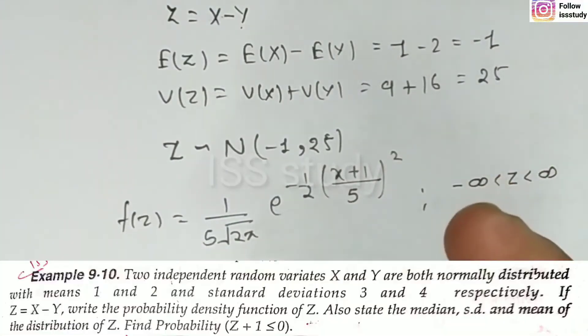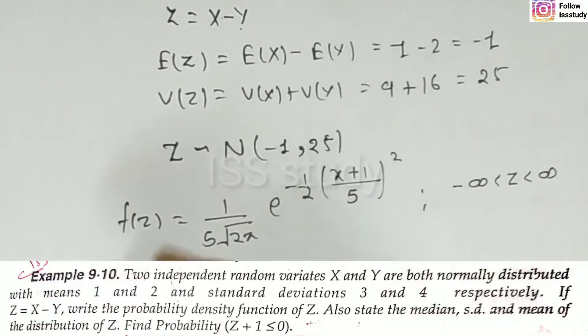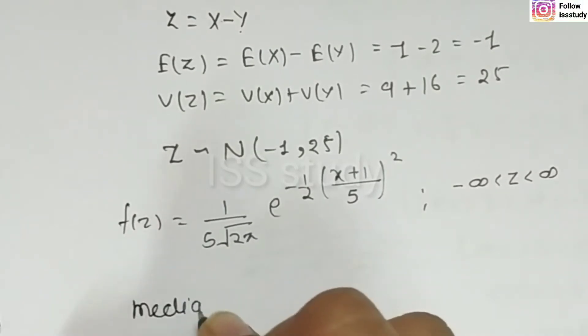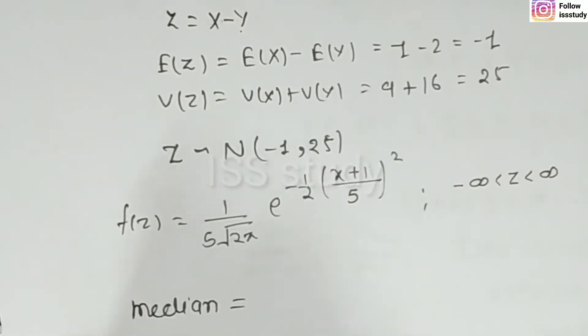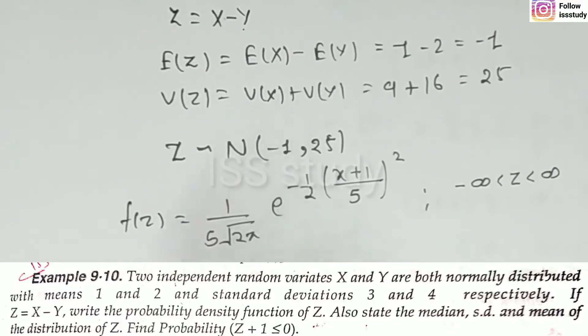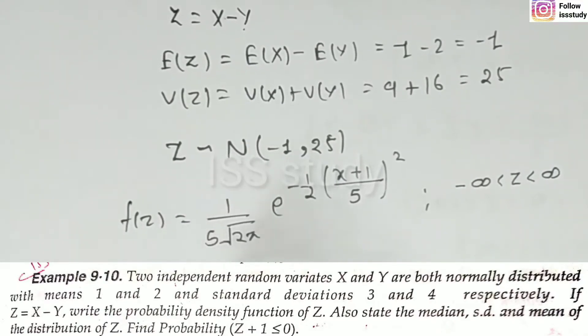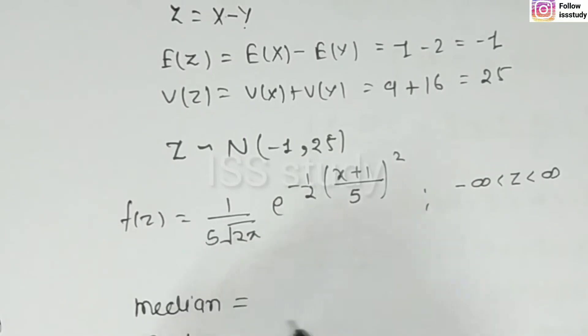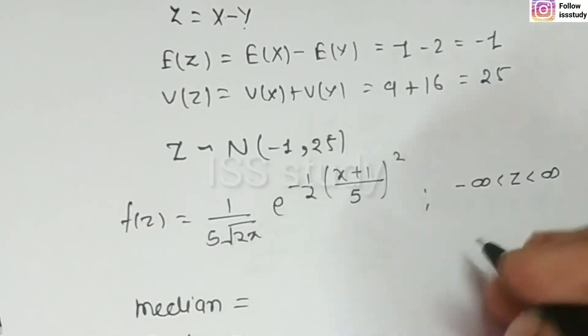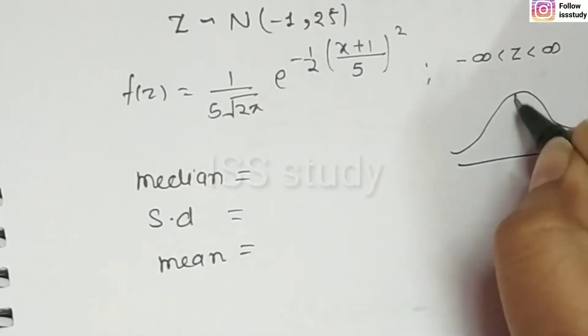Then, the question is, also state the median. Now, let's see here. Median and standard deviation and mean of the distribution of z. Now, let's see, you know, that the normal distribution is a symmetric distribution.